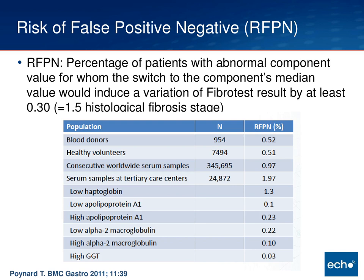Thierry Poynard, one of the French researchers who developed FibroSure, published a study looking at the risk for false positive and false negative results. They looked at whether the fiber test was 0.3 or more different — which would correlate with a 1.5 histologic fibrosis stage difference. It's about 1% of the time that we see really discordant results, with low haptoglobin being the most common driving lab result. My own experience has been more with alpha-2 macroglobulin, but this study suggests otherwise.